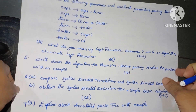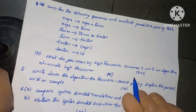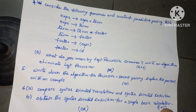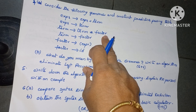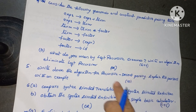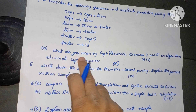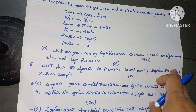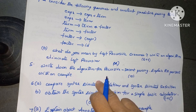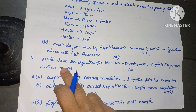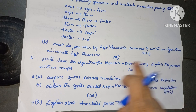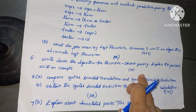Question 4: consider the following grammar and construct the predictive parsing table. The grammar is: Expression → Expression + Term, Expression → Term, Term → Term * Factor, Term → Factor, Factor → (Expression), Factor → ID. This is for 6 marks. B bit: what do you mean by left recursive grammar? Write an algorithm to eliminate left recursion, 4 marks. Or internal choice Question 5: write down the algorithm for recursive descent parsing and explain RD parsers with an example — totally 10 marks.